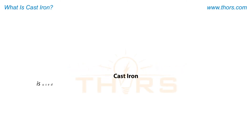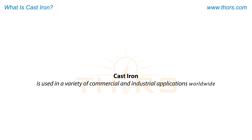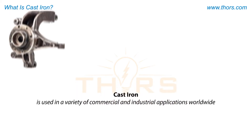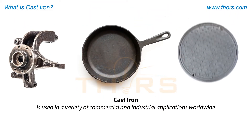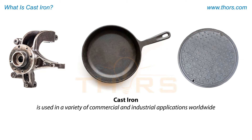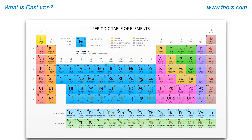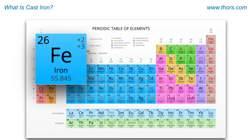Cast iron is used in a variety of commercial and industrial applications worldwide, including vehicle parts, cookware, construction equipment, and much more. The atomic symbol for iron is Fe, and cast irons are considered ferrous metals.